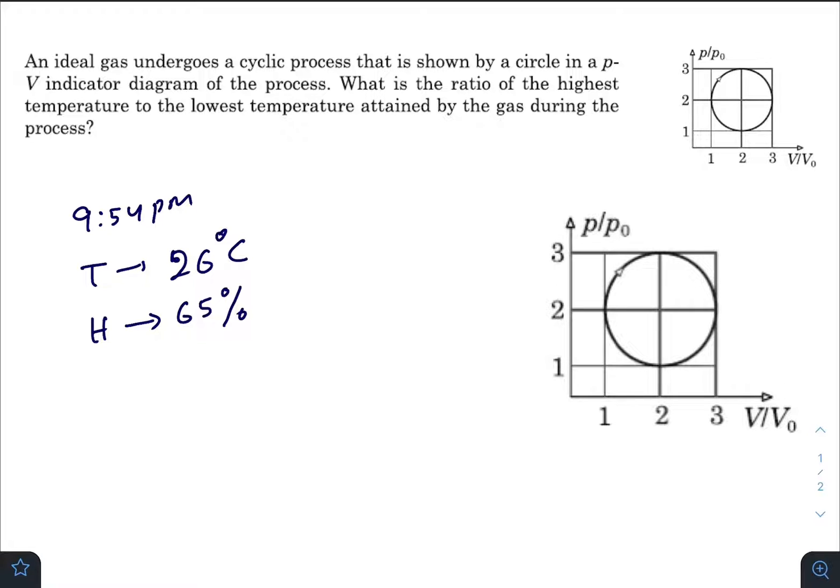along the y-axis is a ratio of p by p₀, and along the x-axis is V by V₀. This is the cyclic process and somewhere the temperature is maximum and somewhere the temperature is minimum.